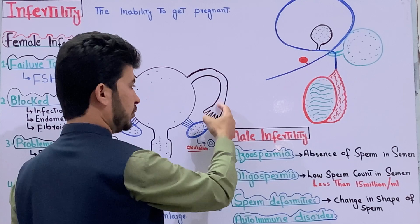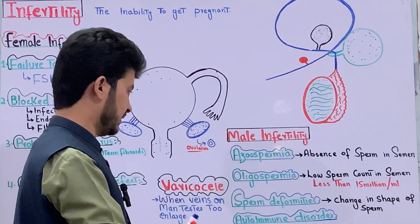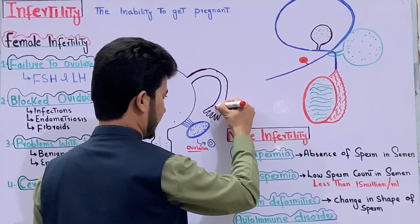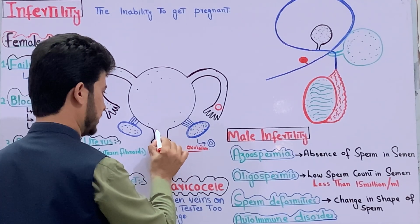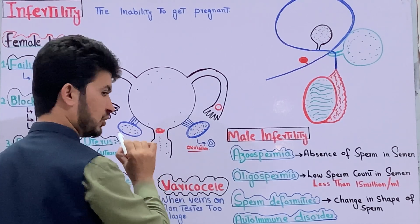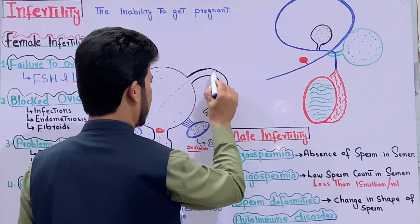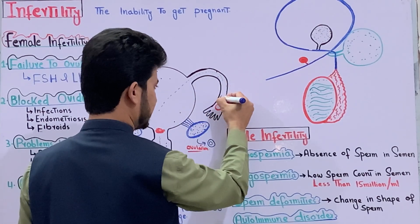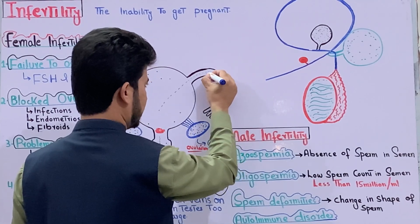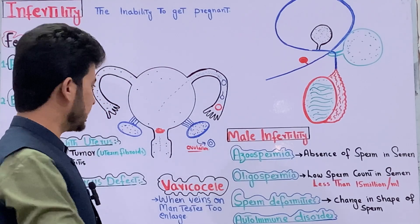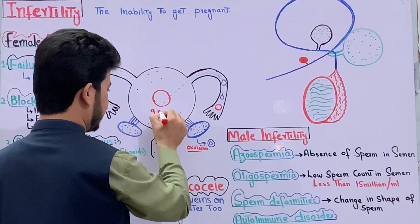The egg enters the fallopian tube via finger-like projections. The egg travels through the fallopian tube where it meets the sperm. The sperm and egg fuse to form a zygote. The zygote travels through the fallopian tube into the uterus, where implantation occurs, and development continues over nine months.